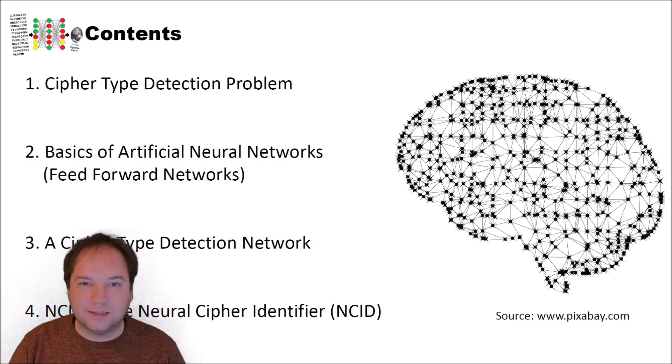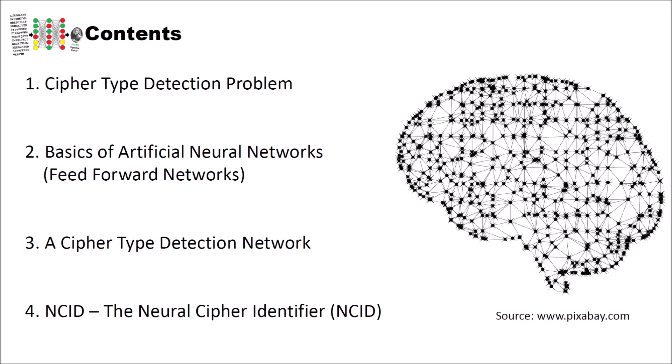We structured the video into four different parts. In the first part, we will discuss the cipher type detection problem. After that, you will learn the basics of artificial neural networks — in particular feed-forward networks — since we will use these to detect the type of ciphers. Then we will discuss a cipher type detection network approach. And finally, we will have a look at NCID, the neural cipher identifier that we built to identify unknown cipher types.